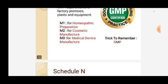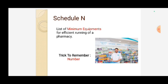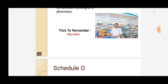Schedule N — the trick is 'N for Number.' Schedule N is the list of minimum equipment for running a pharmacy. How many and what number of equipment are required for a pharmacy to operate? That is Schedule N — list of minimum equipment.